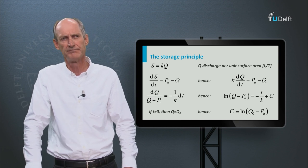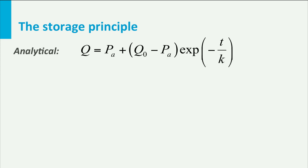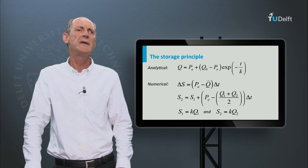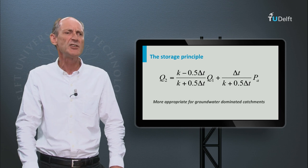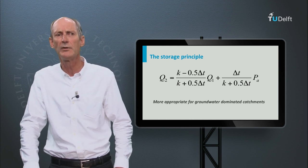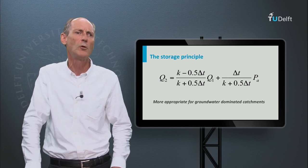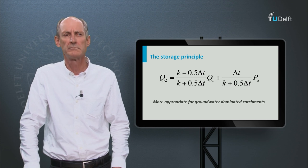We call that the storage principle. The solution is an exponential function with a fixed timescale k. For every time increment, we can apply this principle, whereby the runoff tends exponentially to the effective precipitation PA, starting from the discharge in the previous time step. We can do this analytically, but also numerically. The numerical approach can be easily done in a spreadsheet. The numerical solution is that the discharge Q2 at the next time step is a function of the effective precipitation and the discharge in the previous time step. The coefficients depend on both the time scale and the time step. It is easy to see that the sum of the two coefficients equals 1. Why is that? Here is what the results look like for different values of the residence time k.